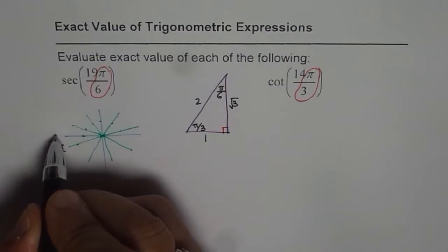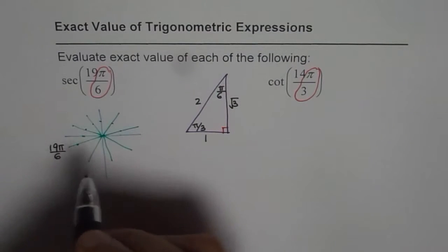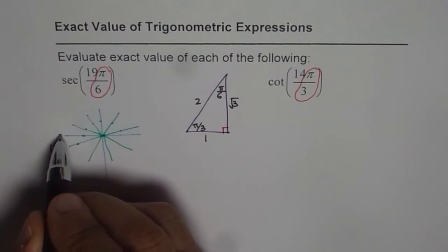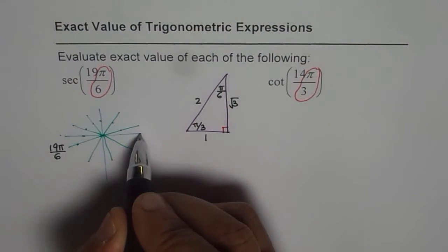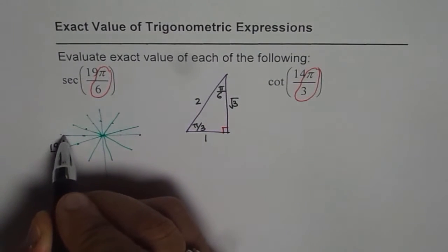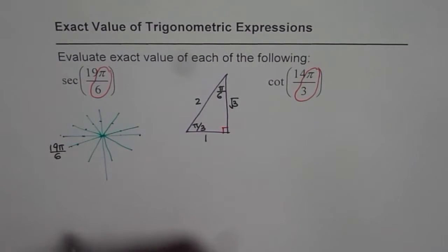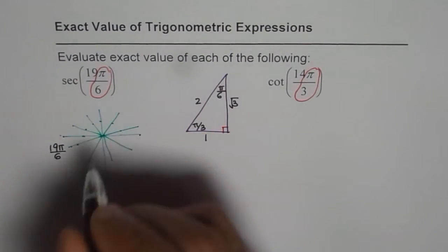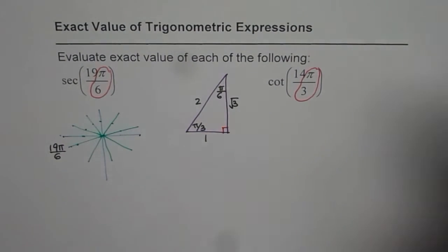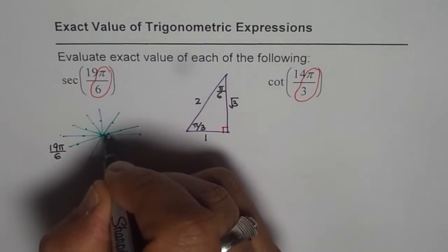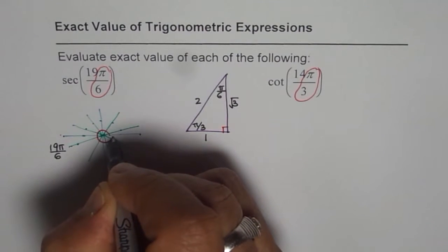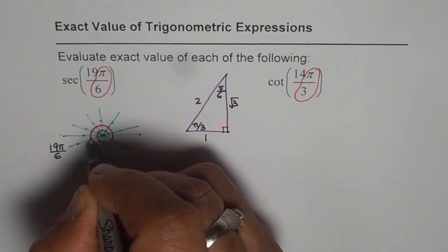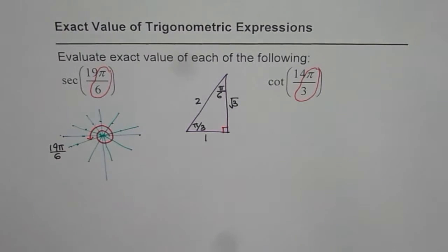So we had π by 6, that means 6π by 6, 12π by 6, 18π by 6 and one more, 19π by 6. So basically 19π by 6 for us is one full circle and then that is the point. That is 19π by 6.